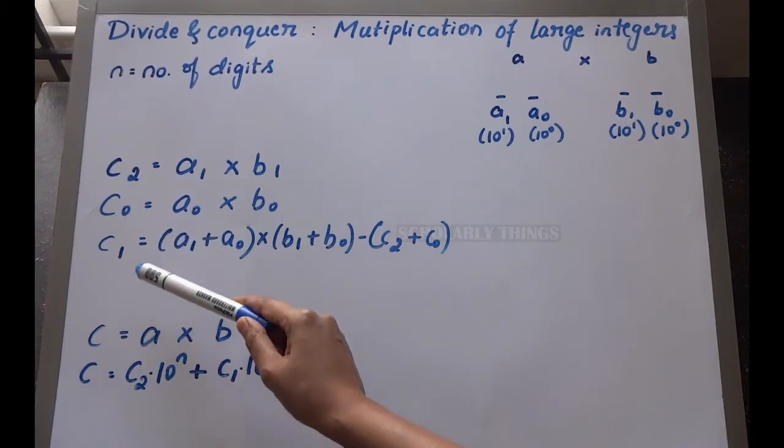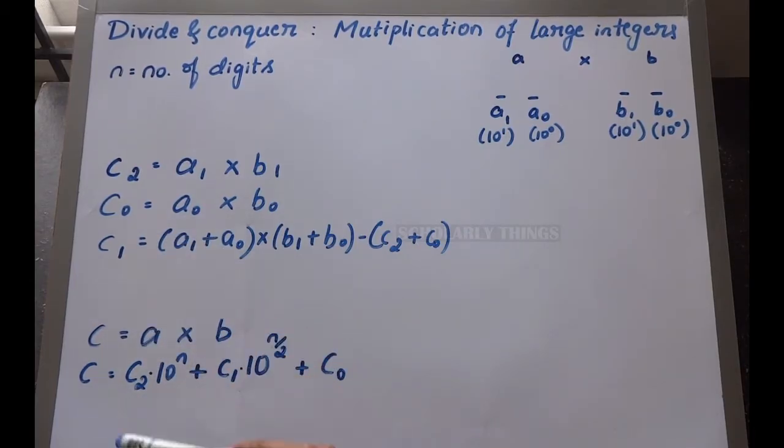c is equal to a × b. c is equal to c2 × 10^n + c1 × 10^(n/2) + c0.